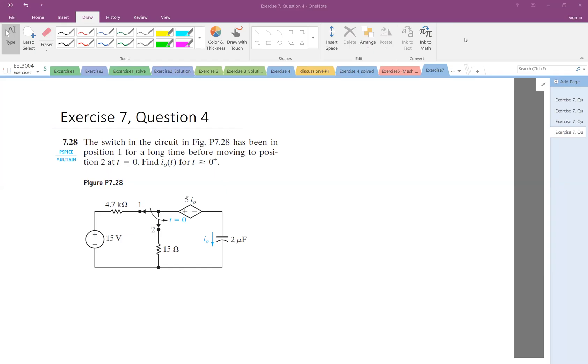The switch in this circuit has been in position one for a long time before moving to position two. For a long time, this has been opened and the switch was here. So we have this circuit and then we switch it here. The problem wants us to find I0, which is here. So for t less than 0, this is the equivalent circuit.